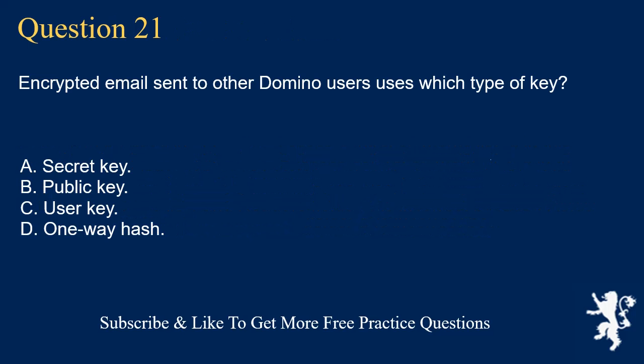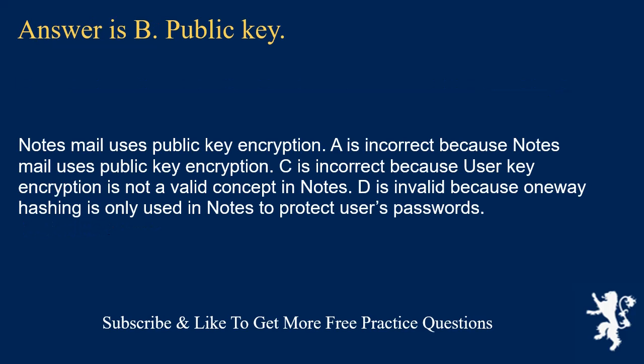Question 21. Encrypted email sent to other Domino users uses which type of key? Secret key. Public key. User key. One-way hash. Answer is B: Public key. Notes mail uses public key encryption. A is incorrect because notes mail uses public key encryption, not secret key. C is incorrect because user key encryption is not a valid concept in Notes. D is incorrect because one-way hashing is only used in Notes to protect users' passwords.